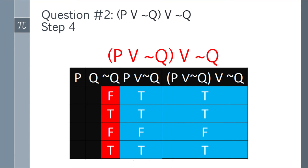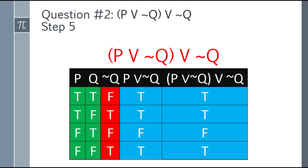Now solve the whole equation: (P OR ¬Q) OR ¬Q. First row: true OR false — true. Second row: true OR true — true. Third row: false OR false — false. Fourth row: true OR true — true. The final answers are: true, true, false, true.